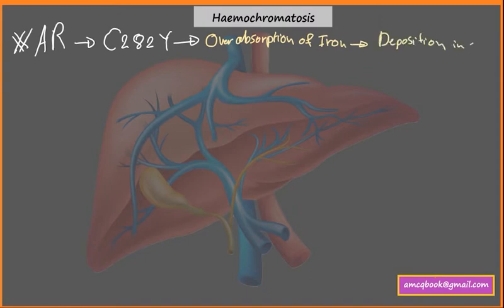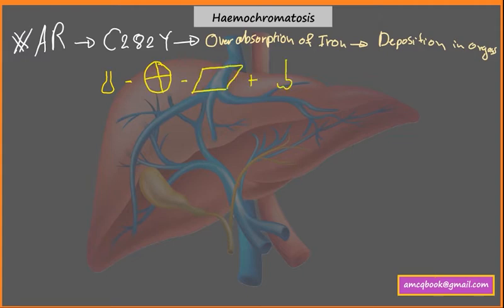Iron deposits in various organs, for example the pituitary gland, heart, skin, joints, pancreas, genital organs, and finally the liver.